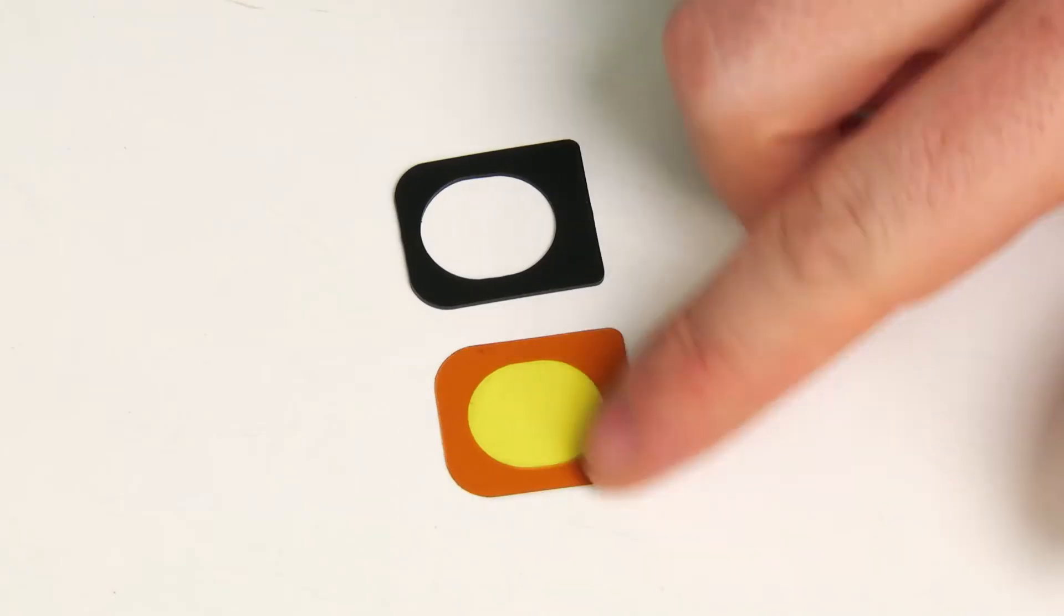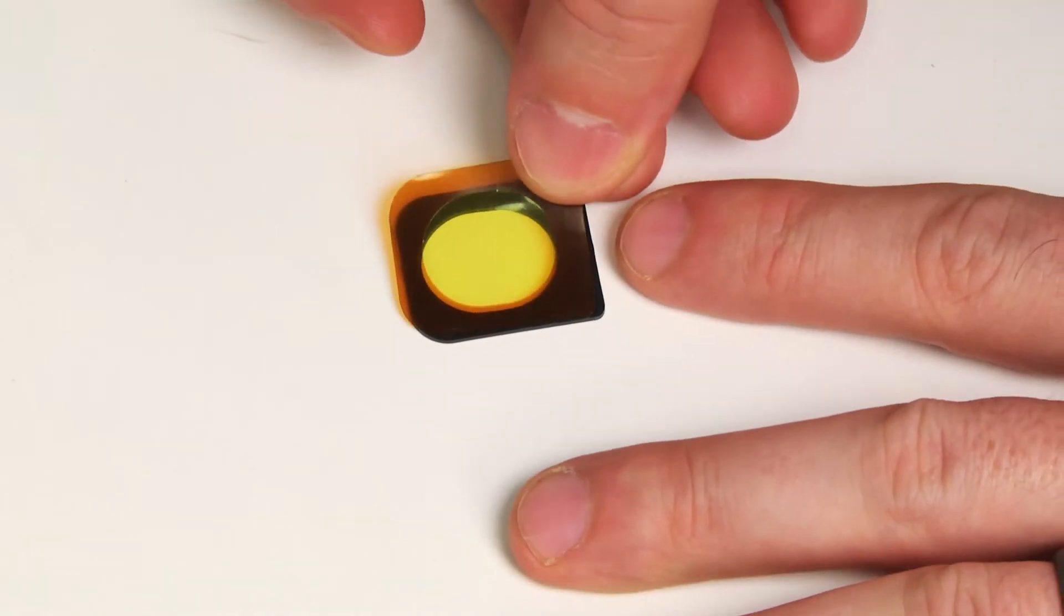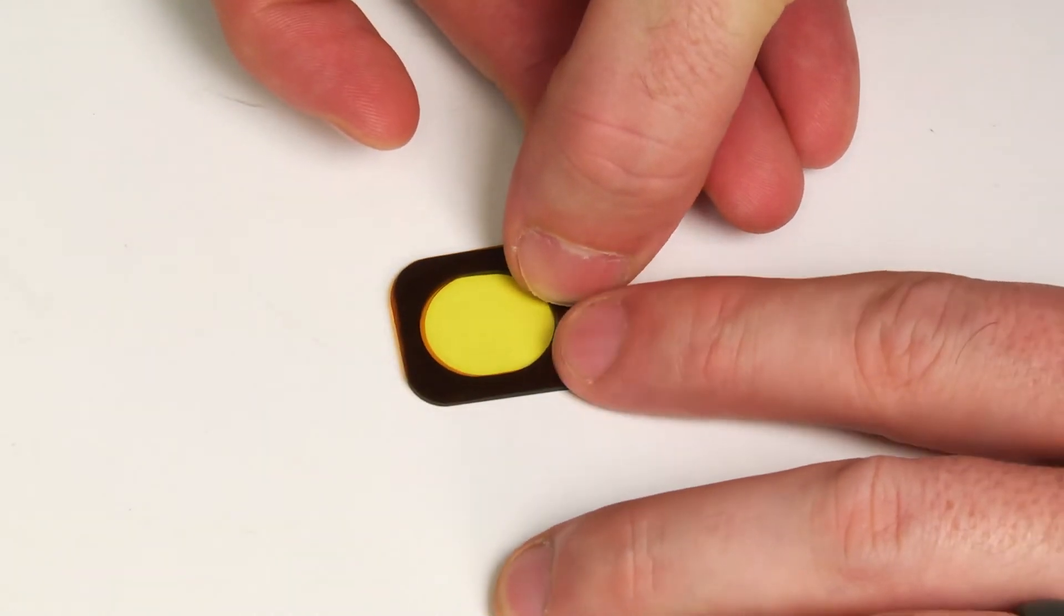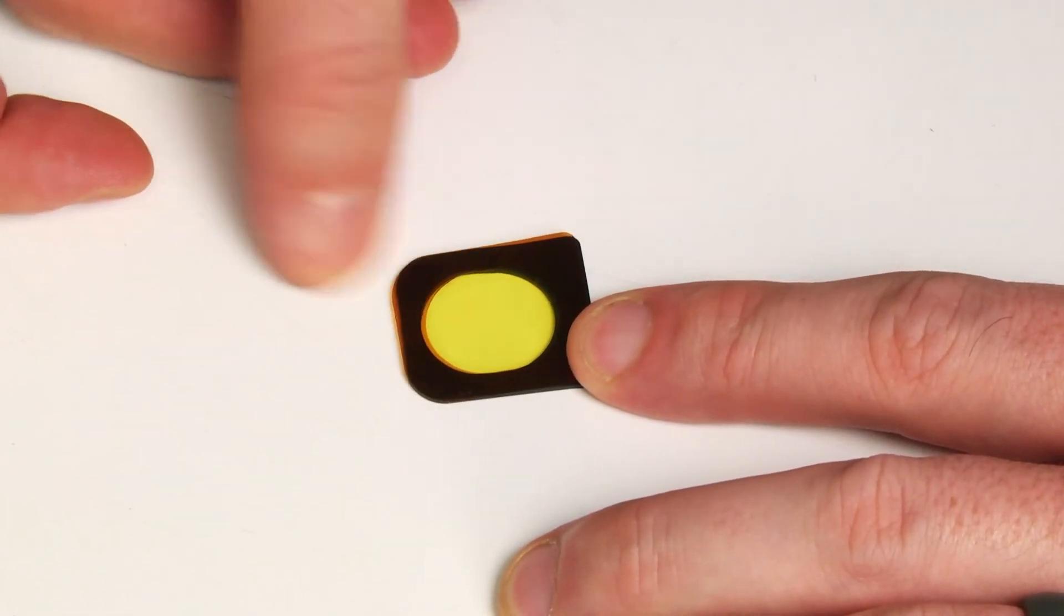Place the analyzer window on the gasket so that the rounded edges match up. Gently press around the edges of the window to adhere the window to the gasket.